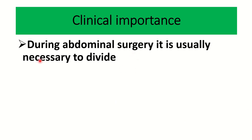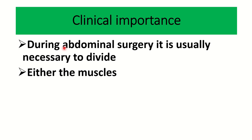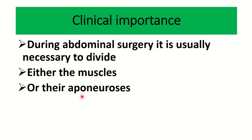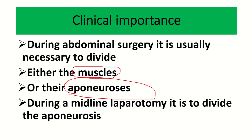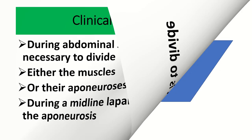The clinical importance of the anterior abdominal wall: during abdominal surgery, it is necessary to divide the abdominal wall to enter the abdomen. This division may be through the muscle or through the aponeurosis. During a midline incision, we divide the aponeurosis. For incisions other than the midline, we have to separate the muscle groups of the anterior abdominal wall. Thank you all.